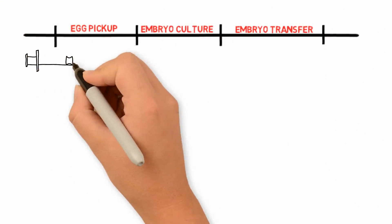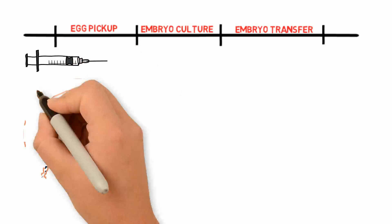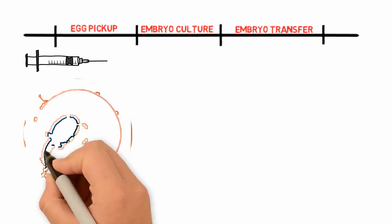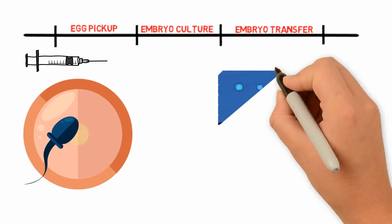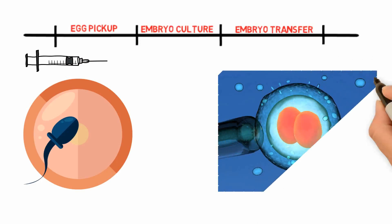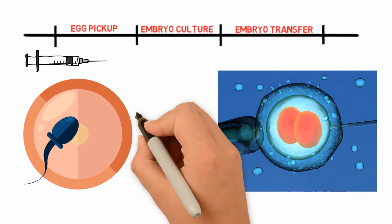At the time of egg pickup, we find out the number of eggs showing the first signs of fertilization. 48 hours later, on day 3, the embryos now have between 7 and 9 cells and depending on their quality, number and quantity, the time for transfer is decided.